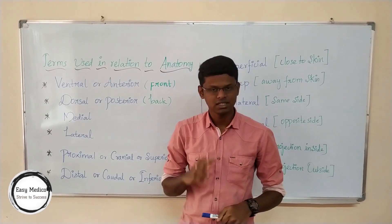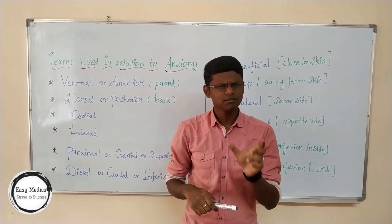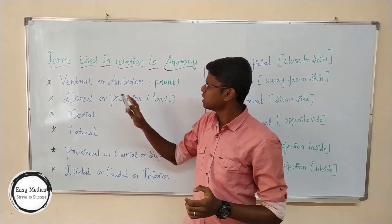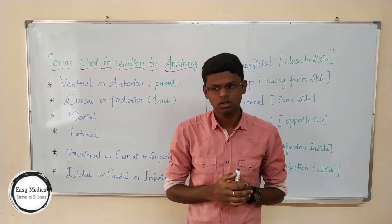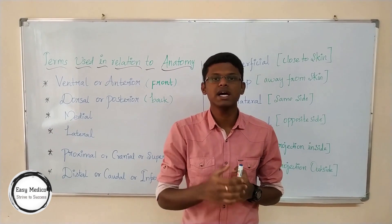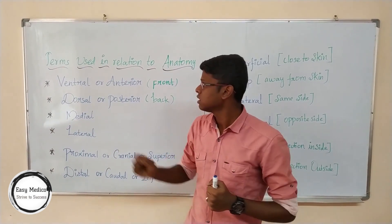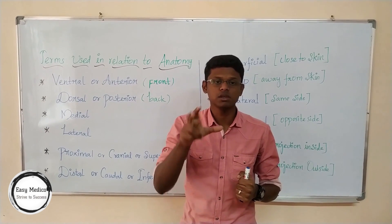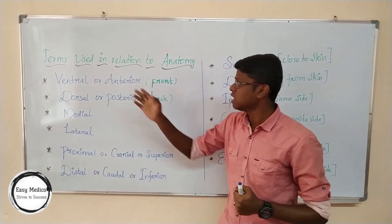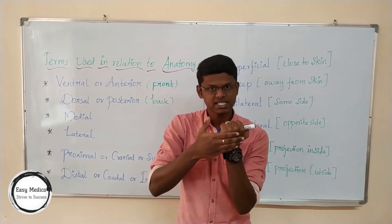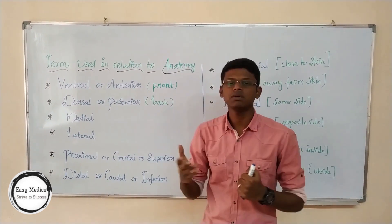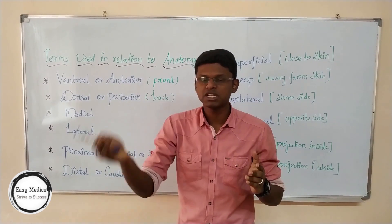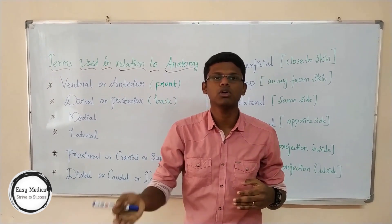Now let's discuss the common terms used in anatomy. Some terms differentiate positions — for example, if you are a doctor or an orthopedician, you ask a patient to take an X-ray and mention the anterior, posterior, lateral, or medial view. You should understand what these terms mean. Ventral or anterior means the front side — like my face. Dorsal or posterior means the back side. These terms can refer to any part of the body, any bone, or any organ.